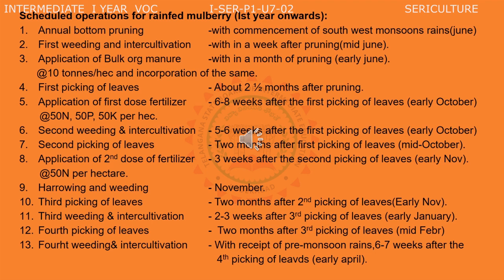The first picking of leaves for silkworm rearing should be done about 2 and a half months after pruning the mulberry garden. Afterwards, application of the first dose of fertilizer at the rate of 50 kg nitrogen, 50 kg phosphorus, and 50 kg potash per hectare should be done 6 to 8 weeks after the first picking of leaves, that is early October. Second weeding and intercultivation should be done 5 to 6 weeks after the first picking. The second picking of leaves is 2 months after the first picking, that is mid-October.